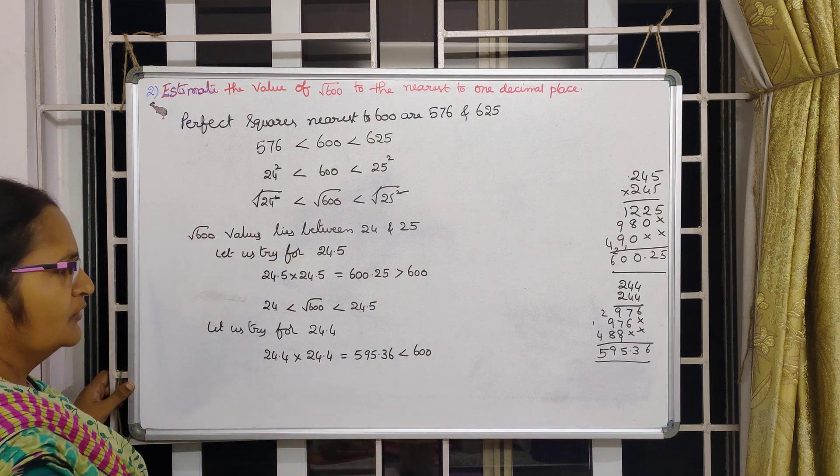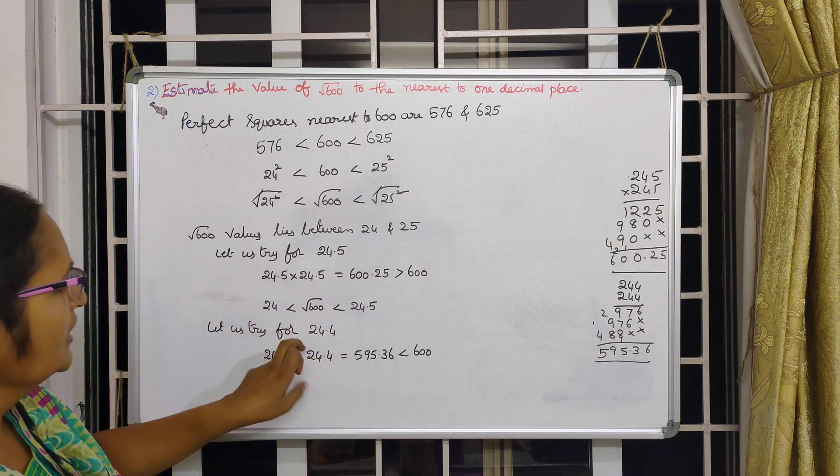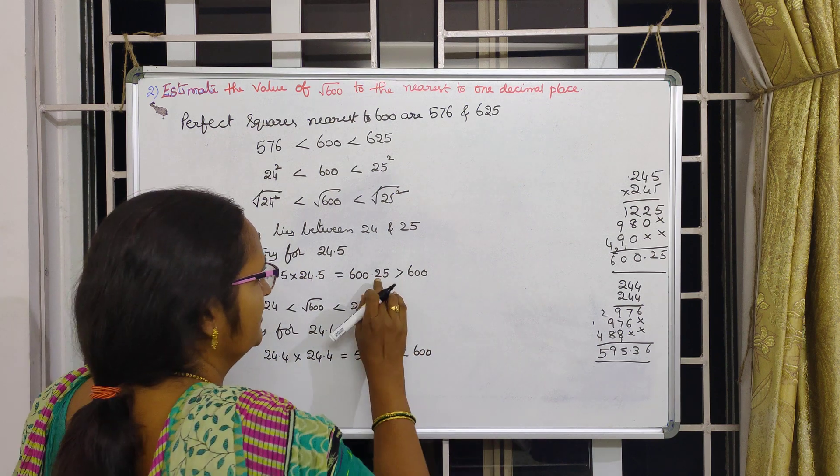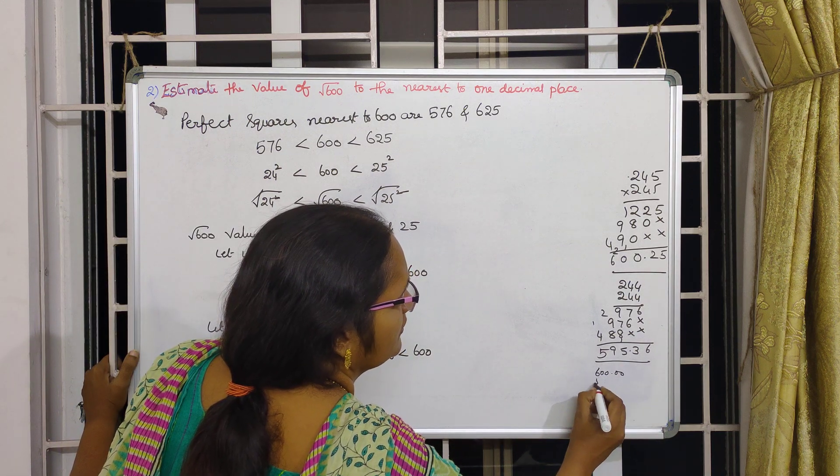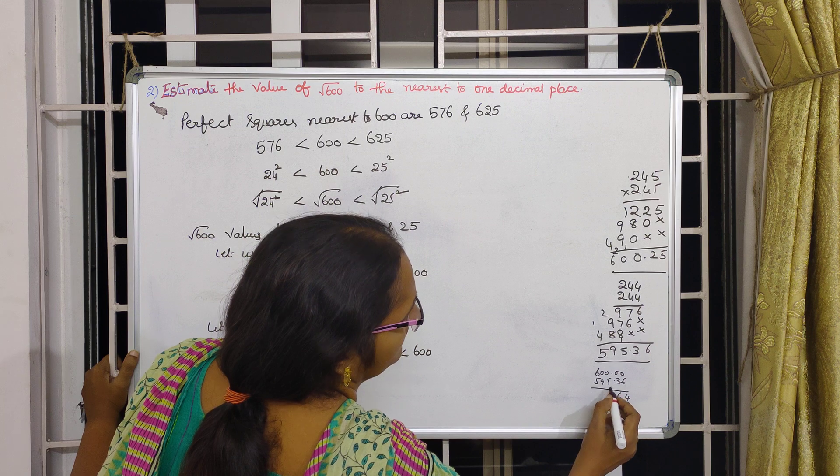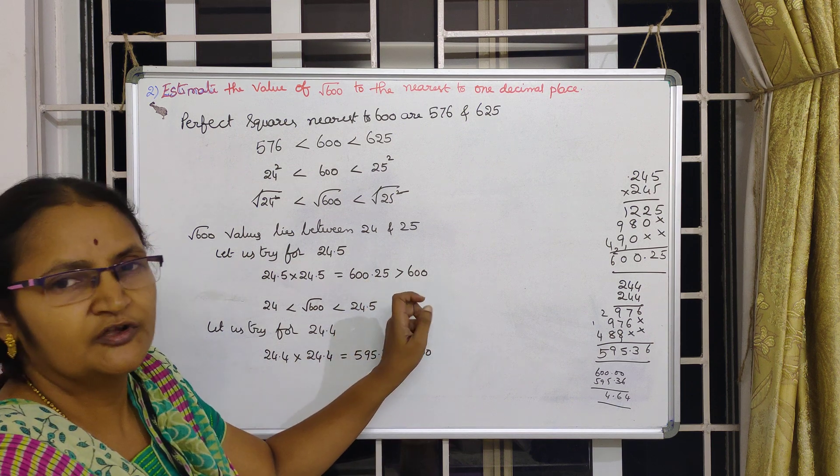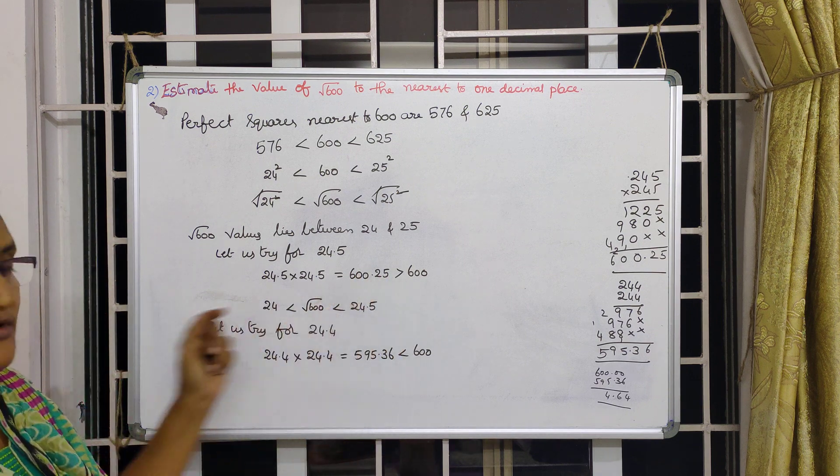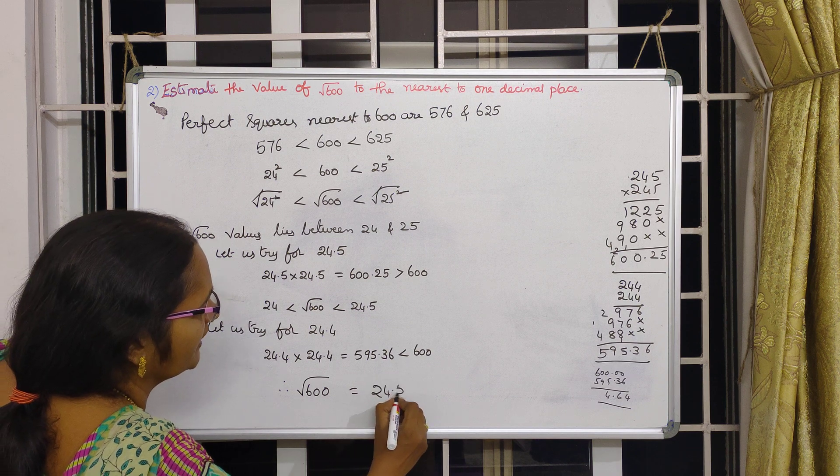This value is less than 600. Now look at here. In between these two possibilities only the answer is existing. Either 24.5 or 24.4. From which number is little bit nearer to 600 we have to find it out. This is 0.25 only more. This is how much less? Suppose from 600 if I take away this value 595.36, 10 minus 6 is 4, 9 minus 3 is 6, 9 minus 5 is 4. Nearly 4.64 is this one lesser, and here it is nearer to only 0.25 only less. So which one is nearer to 600? Nearer to 600 is this one only. Therefore, square root of 600 is equal to 24.5 approximately.